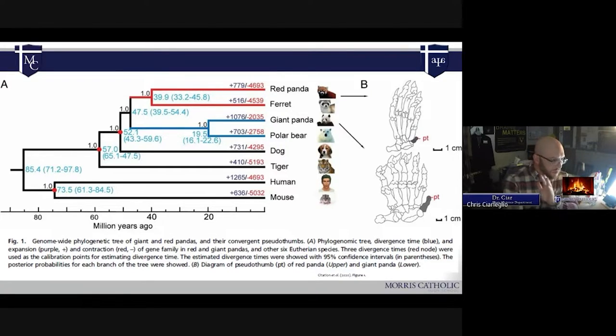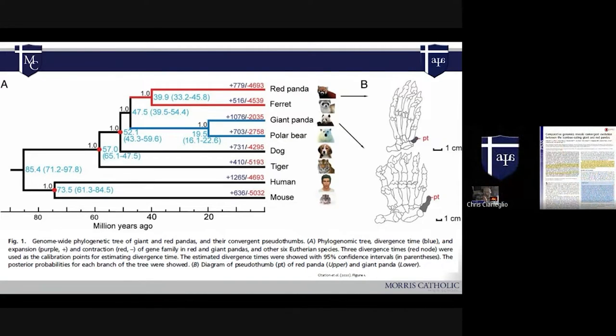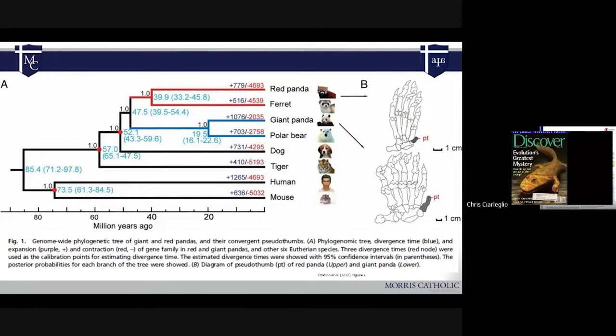In some of the classes I show this thing. This is Acanthostega, which is one of our earliest tetrapods. And when we kind of think about the details or try to observe differences between it and what we expect, one of the things that invariably comes up here is that it has more than five digits. It has eight digits per limb.